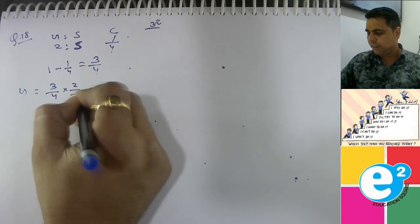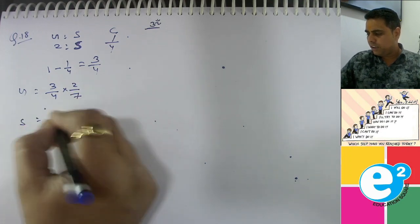2 upon 7. And silver? 3 upon 4. 5 by 7. How much is it? 6 upon 28. 15 upon 28.